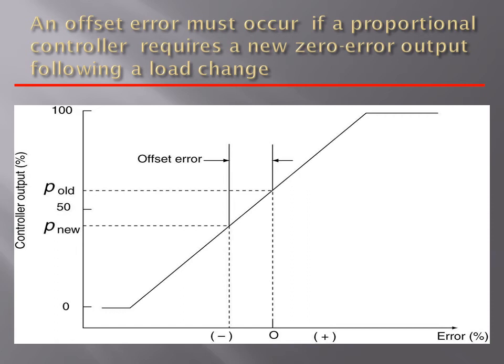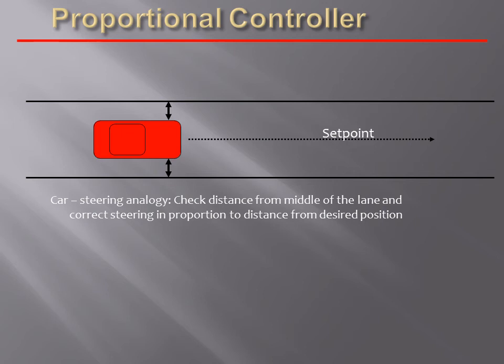The offset error requires a new zero error output following the change in the load, and it is shown here how the offset error occurs. An example of the proportional controller is the car steering analogy: check the distance from the middle of the lane and correct steering in proportion to the distance from the desired position, so that the car will move in the linear direction.